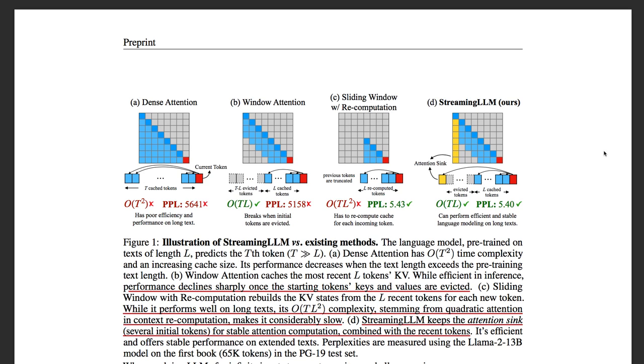So let's look at the intuition why keeping the initial token will drastically improve the model performance in streaming setup. Streaming here refers to having basically unlimited amount of tokens feeding to the model as input.